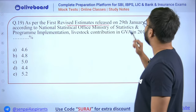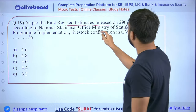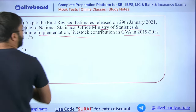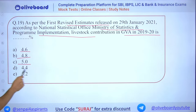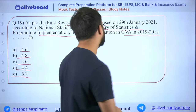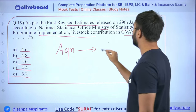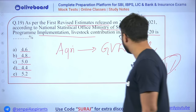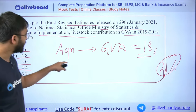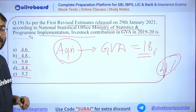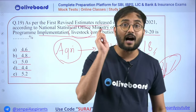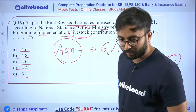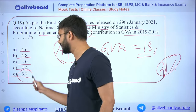Next: As per the first revised estimate released on 21 January 2021 by the National Statistical Office, livestock contribution to GVA in 2019-20 is how much? Options: 4.6, 4.8, 5, 4.4, 5.2. Note that NABARD 2021 asked agricultural contribution to GVA (which was 18% then, now ~21-22%). Here they ask specifically livestock contribution.